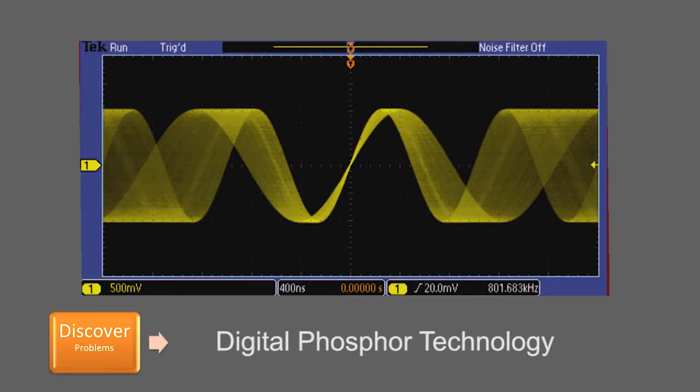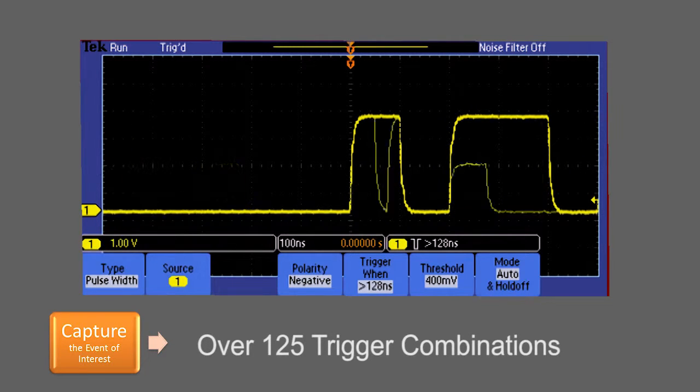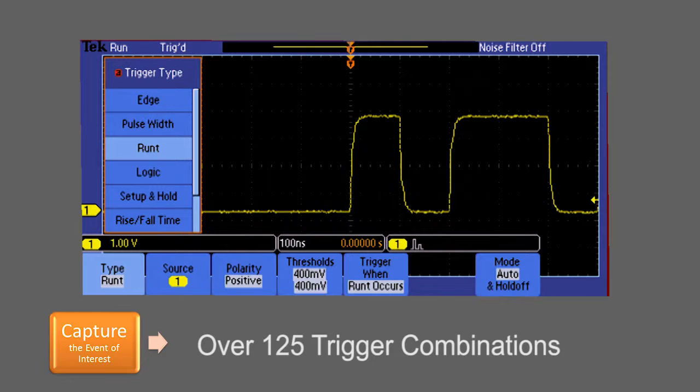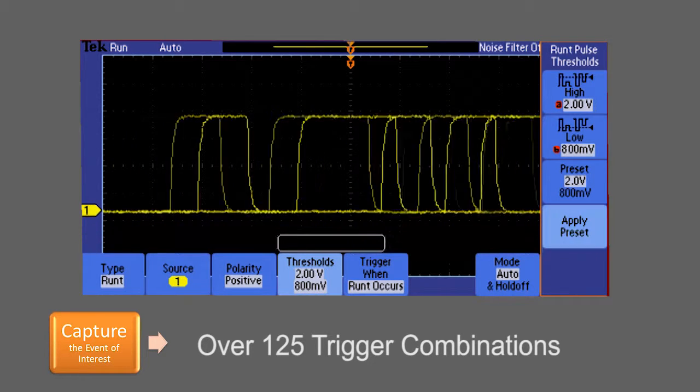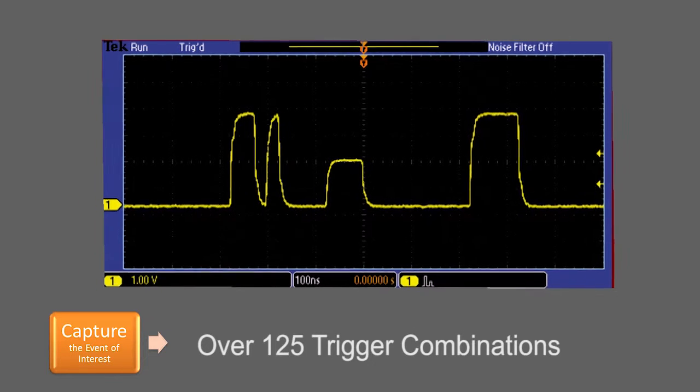With a fast waveform capture rate, you'll see elusive problems quickly. With over 125 trigger combinations, including triggers for serial packet content and parallel data, you can capture your event of interest the first time.